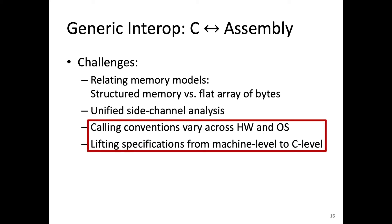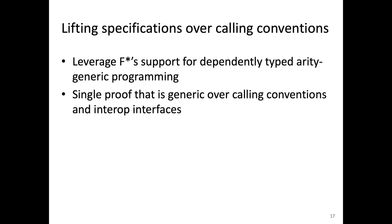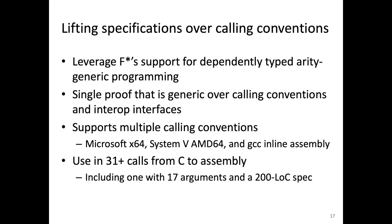In our work, we take advantage of F-star's support for dependent types to write a single description for the semantics of calling from C into assembly. This description is generic over the number of arguments passed, but ensures through dependent typing that each argument has the right type. It's also generic over the calling convention used, but ensures that arguments are passed according to convention and that caller-saved registers are really saved. As a result, we currently support three different calling conventions and are able to write 31 different inter-operation points between C and assembly.